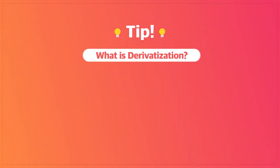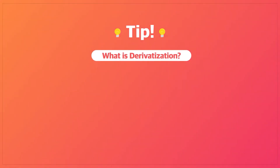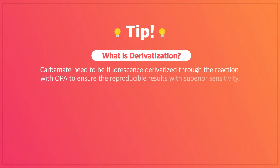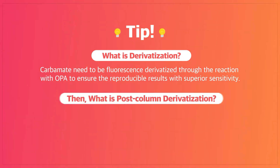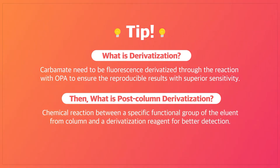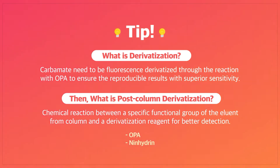Because carbamates don't have UV absorbance, they need to be fluorescently derivatized with OPA reaction, which is one of the post-column derivatization methods to ensure reproducible results with superior sensitivity. Post-column derivatization is the chemical reaction between a specific functional group of the eluents from the column and a derivatization reagent for better detection.